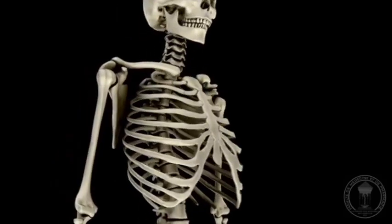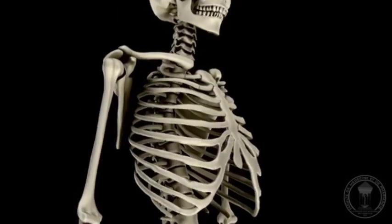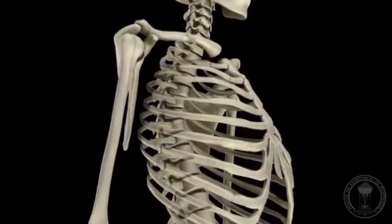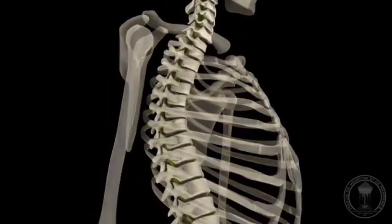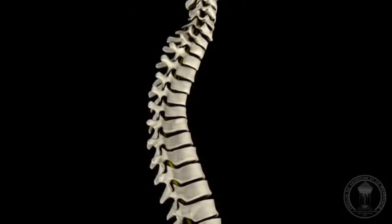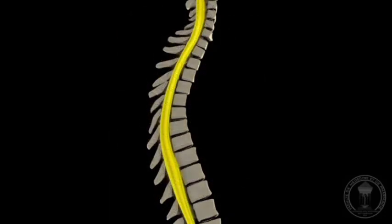Vertebral column or backbone is a column of approximately 33 small bones called vertebrae. Neural canal is the cavity through which the spinal cord passes.